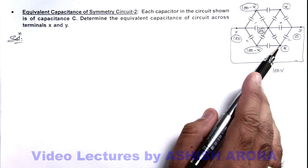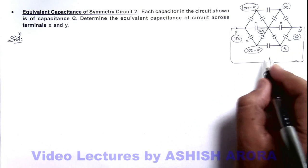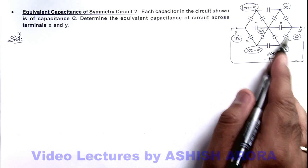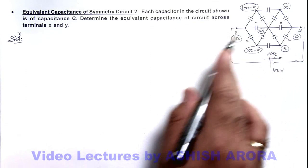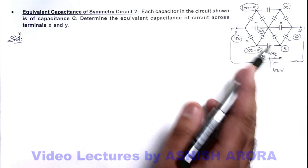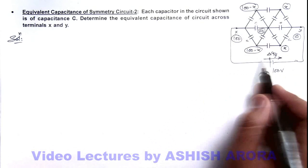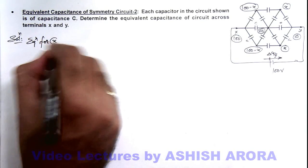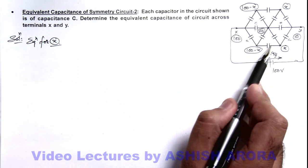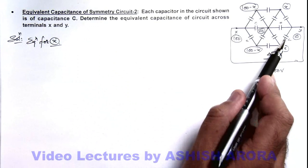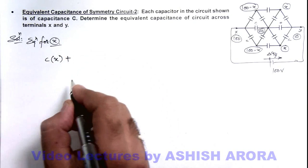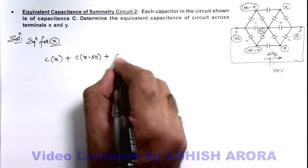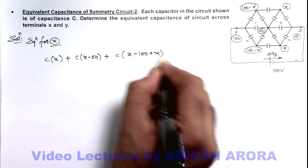If we get the value of X, we can easily calculate the total charge which has flowed through the battery from one side to another, say delta Q. This charge will be deposited on three plates. To find X, we write down the charges on the three plates connected to that node: charge on the first plate is C times (X minus 0), plus charge on the second plate is C times (X minus 50), plus charge on the third plate is C times X. That sum equals zero.